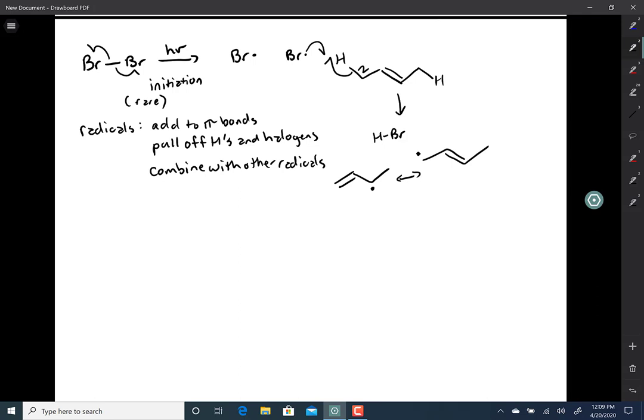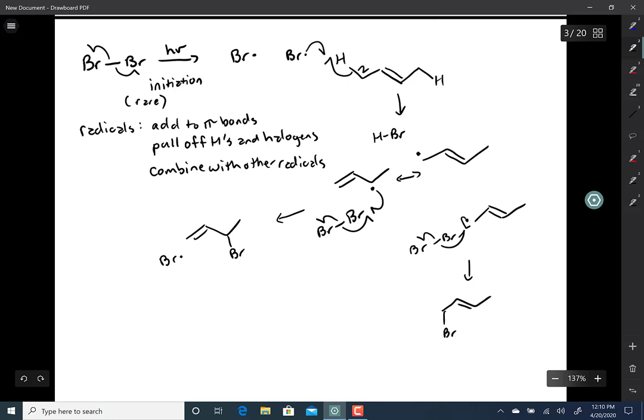And this radical here happens to be resonance stabilized. Now, each of these radicals then finds another molecule of bromine and it basically pulls off a bromine. You end up getting this product and both are possible.